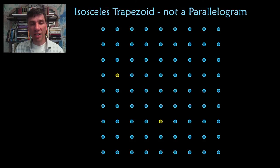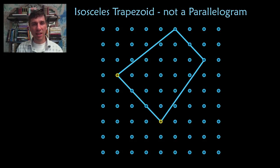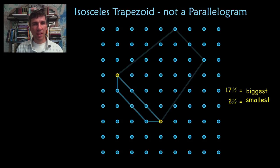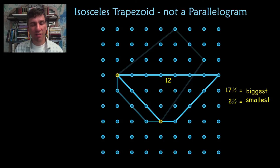An isosceles trapezoid that is not a parallelogram. Try to find that. That is the biggest that I could find, and that's the smallest. That is another possibility, but you can see that it's smaller than the 17 and a half one that I found first.